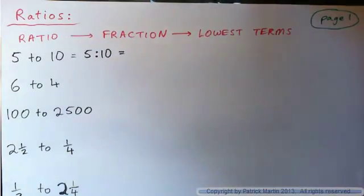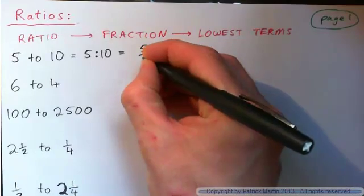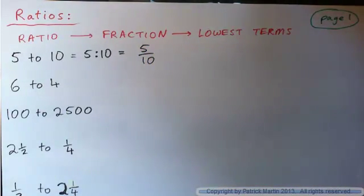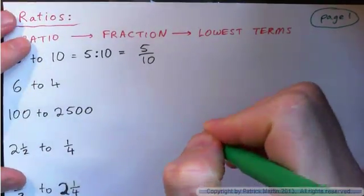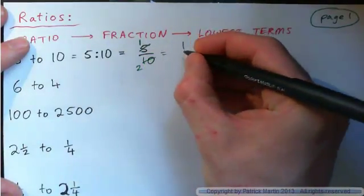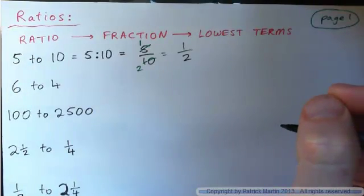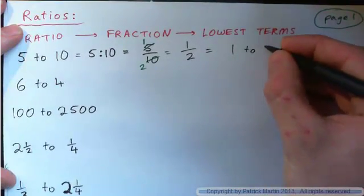What we need to understand is that 5 to 10 can be written as a fraction in this form: 5 over 10. What we like to do is write it as a fraction, then put it in lowest terms, and then write it with the word 'to' again. So 5 over 10 — put it in lowest terms. 5 goes into 5 once, 5 goes into 10 twice, so we get 1 over 2. That can also be written 1 to 2.